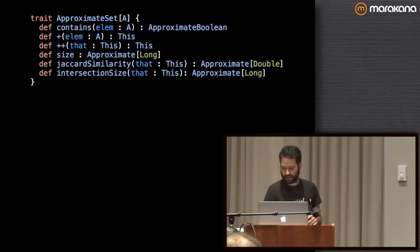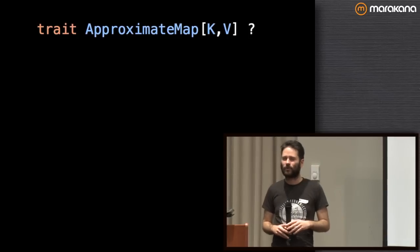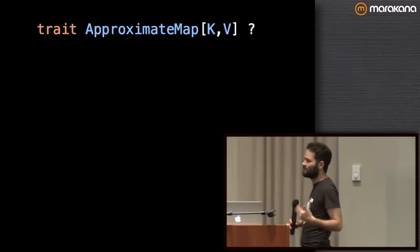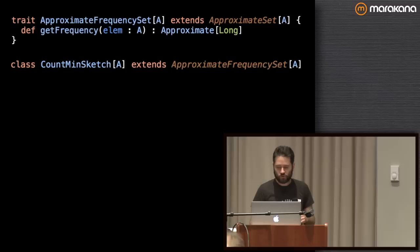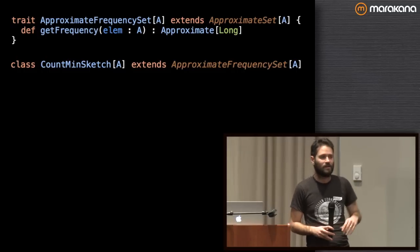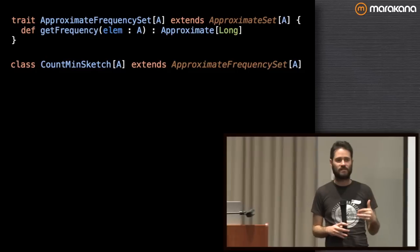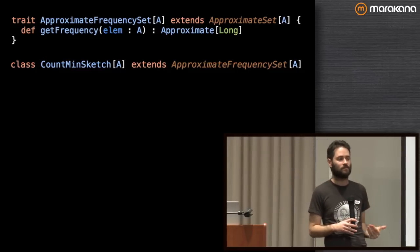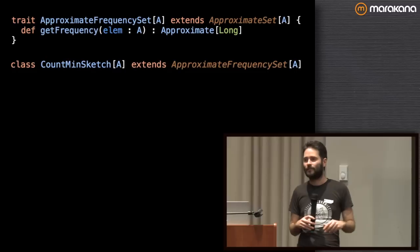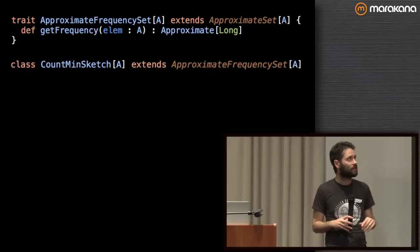That's the approximate set stuff. It would also be nice to have an approximate map. Approximate list doesn't make sense because you can't iterate. But approximate map might. We don't have anything that totally feels like an approximate map yet, but one thing we do have is what I'm calling an approximate frequency set — basically an approximate set where not only can you ask 'does this set contain this element,' you can ask 'how many times did I add this element?' That operation — get frequency or get count — returns an approximate number. We have one instance implemented: the Count-Min Sketch.